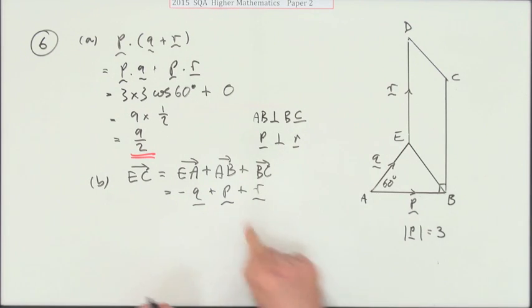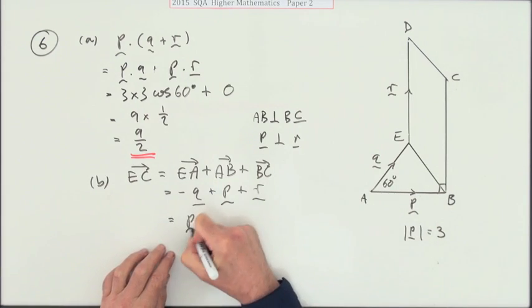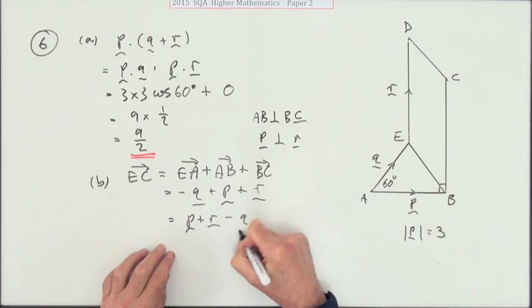So there we go, that should do. Let's rearrange it with the q at the end just so it looks nicer. I've said it: p plus r minus q.